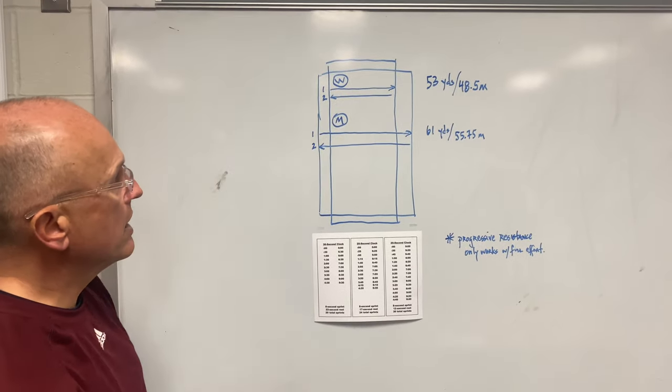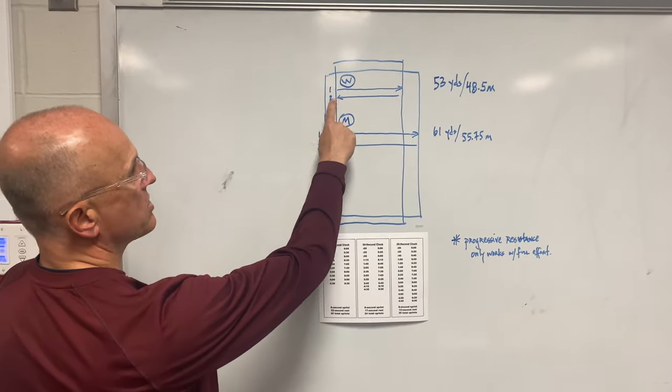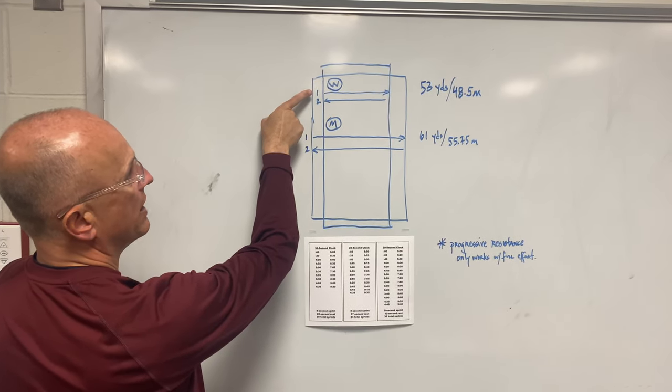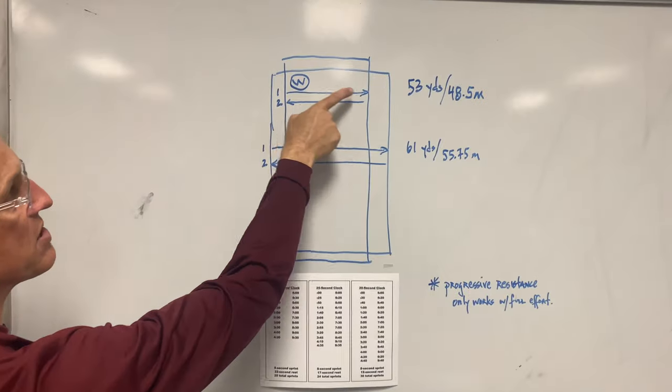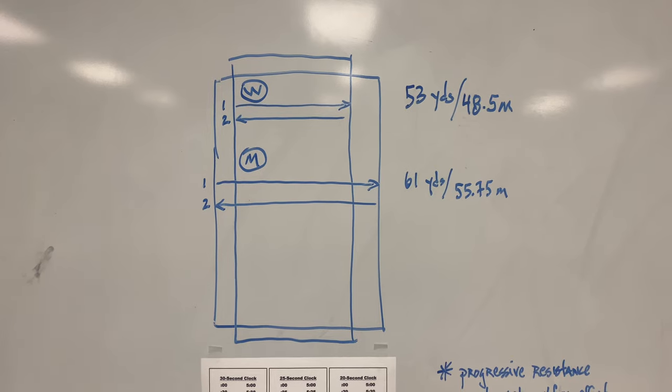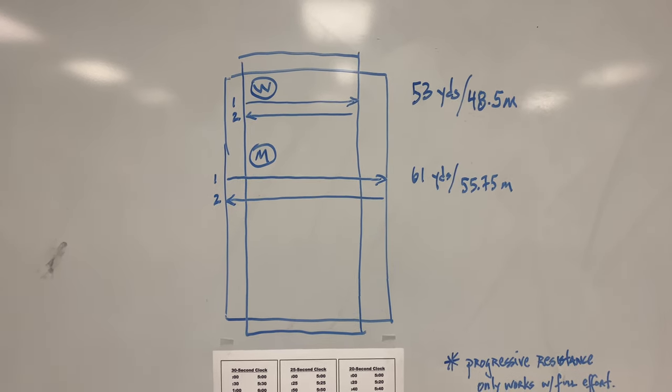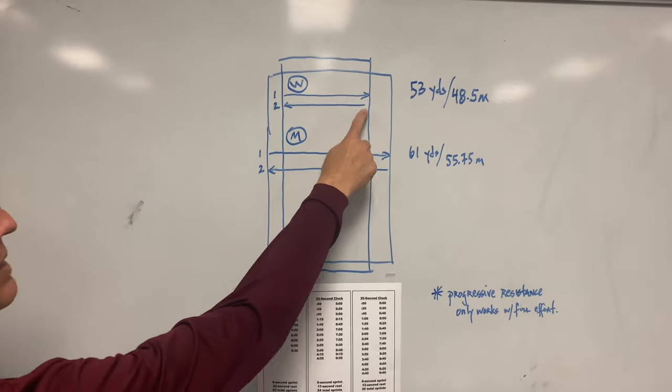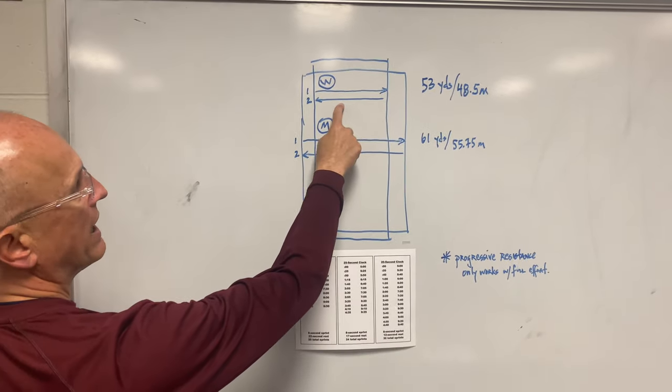And so what the women do is they start 53 yards apart. They start on the first side and run across, sprint across as fast as they can to the other side as quickly as they can. It usually takes seven or eight seconds. Then they have the remainder of the 30 second clock to rest. And then at the bottom of the minute, they sprint back across.